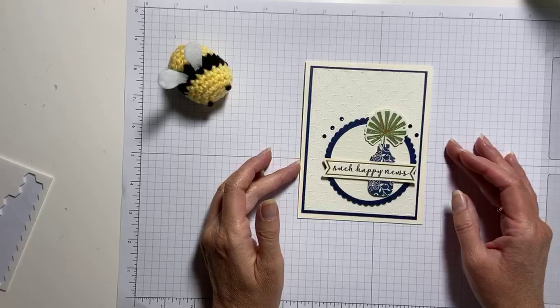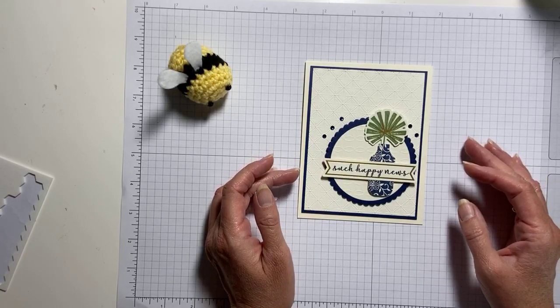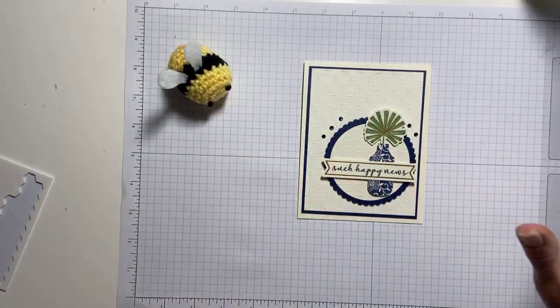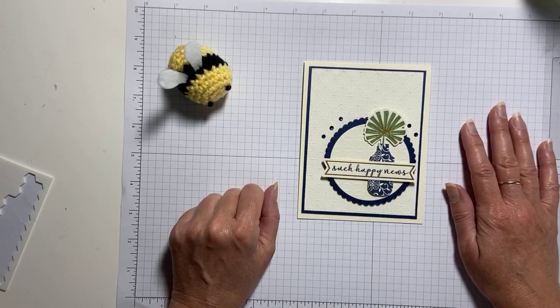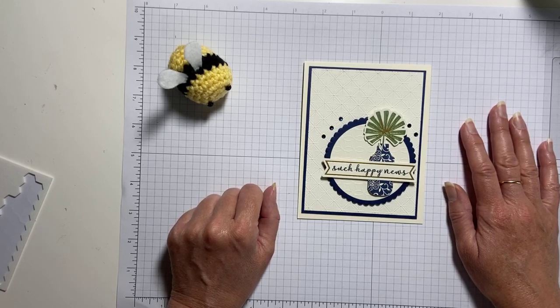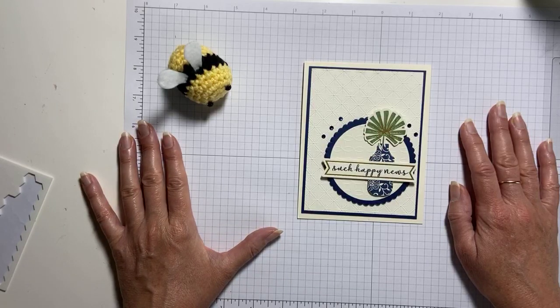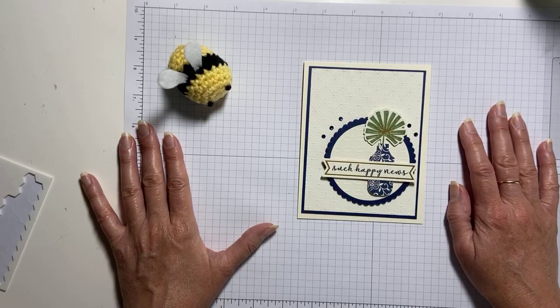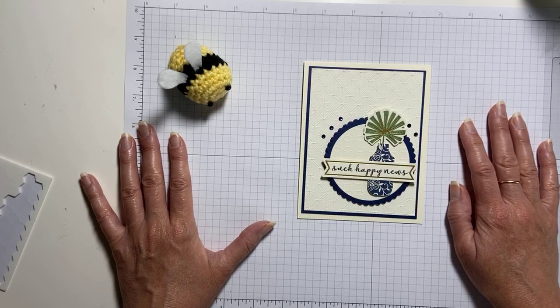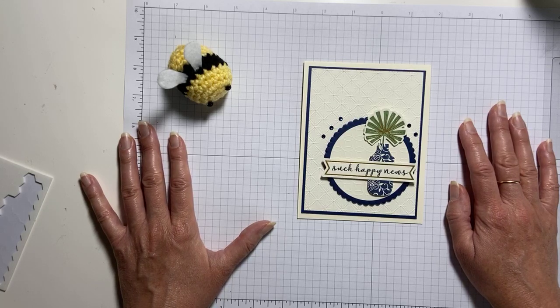Today is Tuesday, July 7th. How is it already July 7th? It's Casing Tuesday, and if you don't know what that means, I'm part of the Casing Tuesday Facebook group. Every Tuesday morning, we take a card straight from the catalog and case it. Casing means copy and share everything. So we put our own creative spin on cards from the annual catalog.